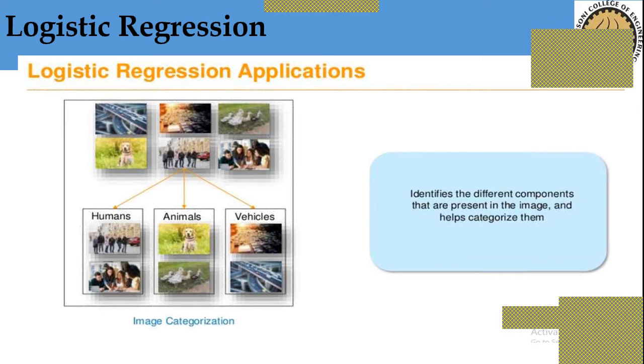When you apply logistic regression, it classifies these images into three classes. Let us consider women, animals, and vehicles. So it makes image classification properly. Logistic regression is also useful for image classification.